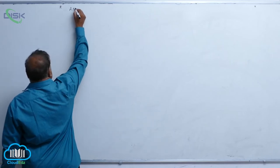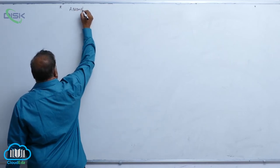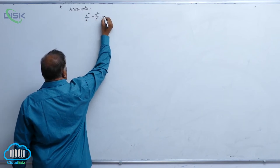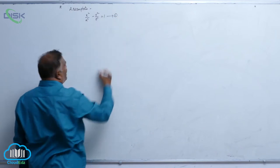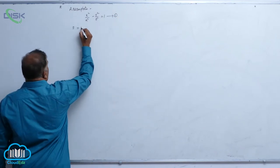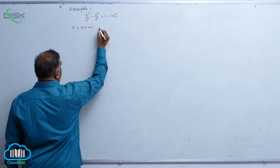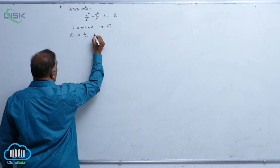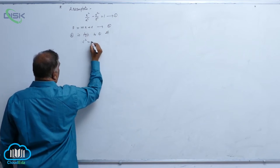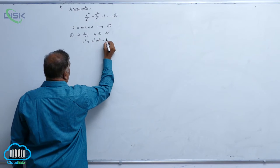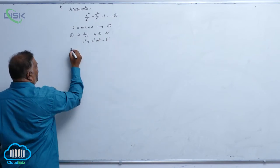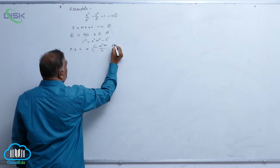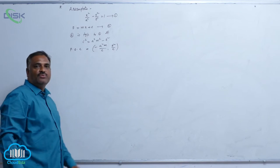We will discuss specially about asymptotes. For the hyperbola x²/a² − y²/b² = 1 (equation 1), y = mx + c is going to be a tangent (equation 2). Equation 2 is tangent to equation 1 if c² = a²m² − b², and the point of contact is (−a²m/c, b²/c). This we discussed earlier.